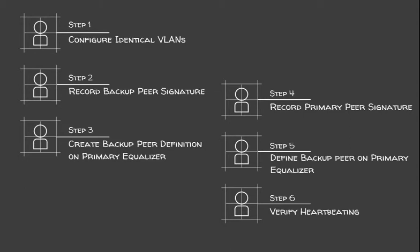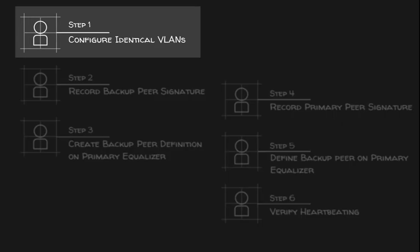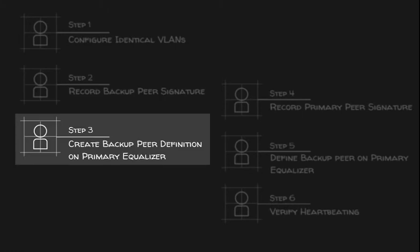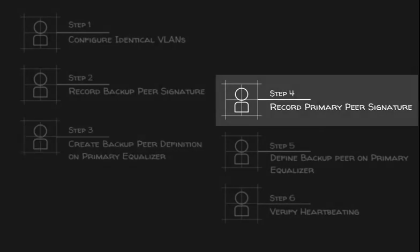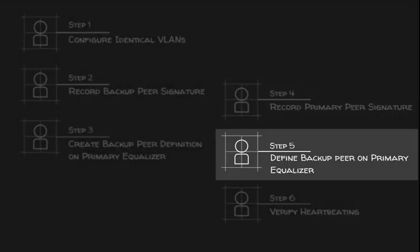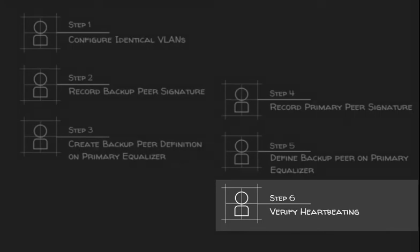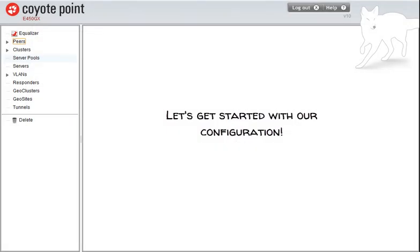It's simple to configure a pair of equalizers for active-passive failover. The first step is to verify that the subnets on the VLANs on the primary and backup equalizer are identical. We'll record the backup equalizer peer signature. We'll define a backup peer on the primary equalizer. We'll also record the peer signature of the primary equalizer and define a peer on the backup. Finally, we'll verify that both units are heartbeating and that our configuration was a success.